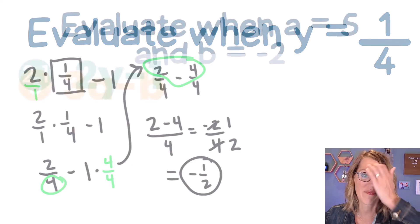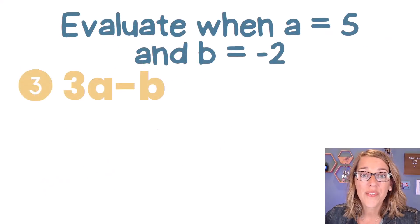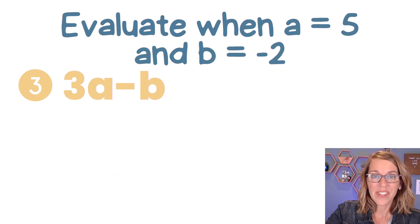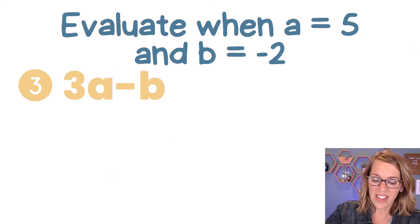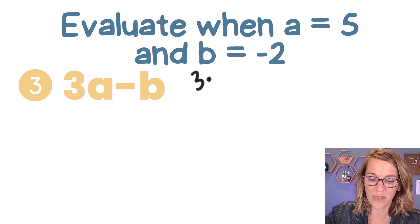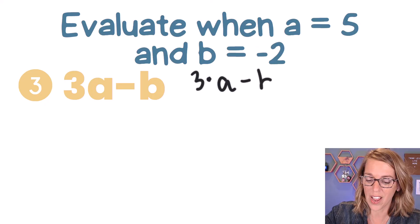Here comes our next one. Now I've got one with two variables, both an A and a B. Let's put this one together. So as I put this one together, I've got 3, and that's going to be 3A, which is going to be 3 times A. So 3 times A minus our B.